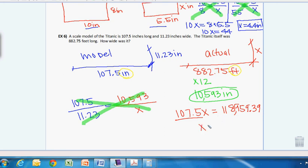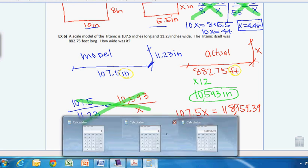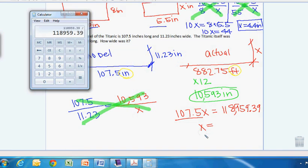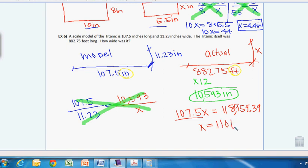So X is going to be equal to, let's bring up this calc again. We're going to divide by, hopefully you guys can see this, this is my first time trying it, 107.5. So we get 1106.6 inches. All right.